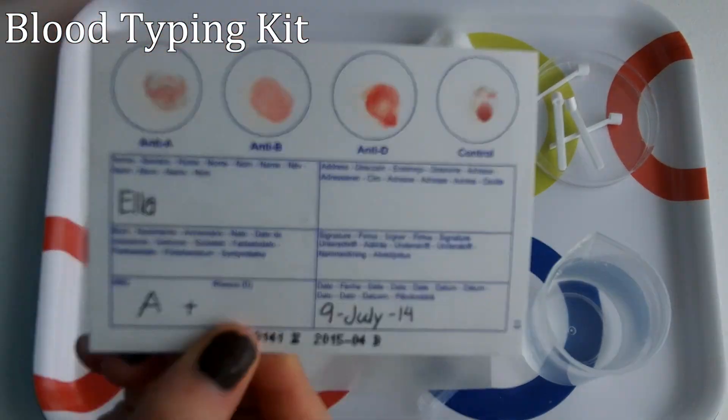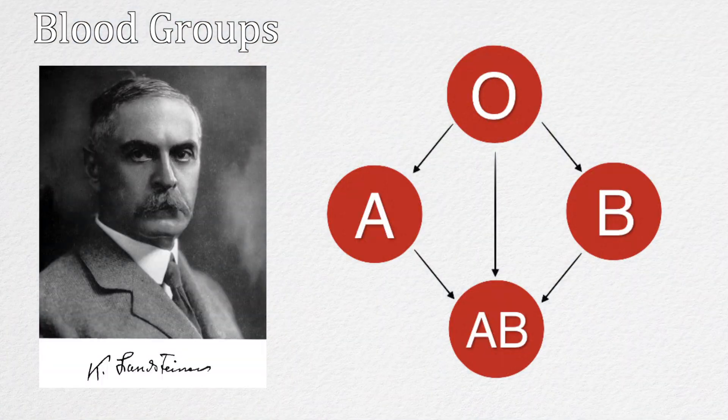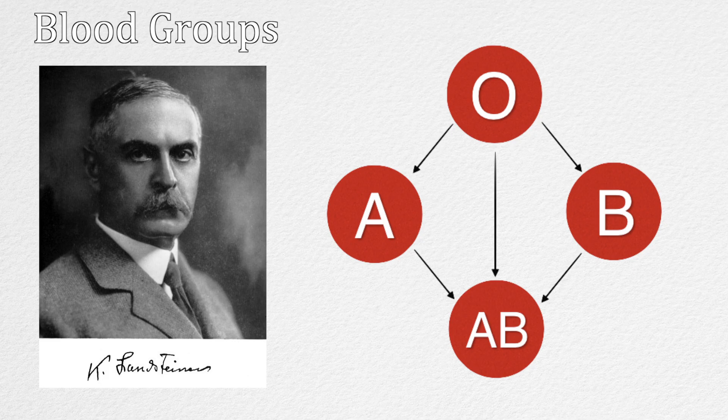The card determined that I was an A+, which is what I already knew before I did this experiment. Carl Landsteiner is the man responsible for identifying the four groups of blood: A, B, AB, and O.